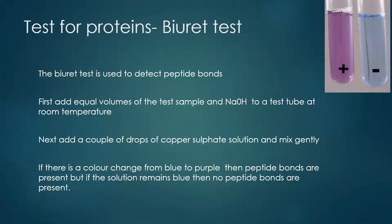In order to test for proteins we must conduct a test known as the Biuret test. The Biuret test basically detects peptide bonds. When carrying out the test, we must add equal volumes of the test sample to sodium hydroxide in a test tube at room temperature. We then add a couple of drops of copper sulfate solution and mix that gently. If there is a colour change from blue to purple then peptide bonds are present, but if the solution remains blue then no peptide bonds are present.